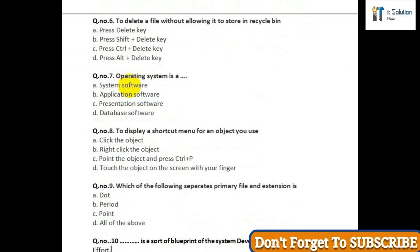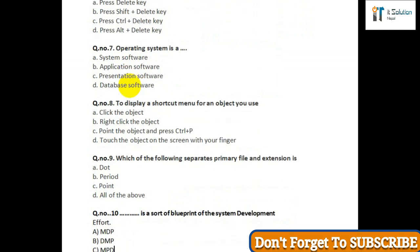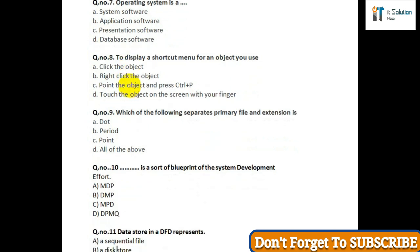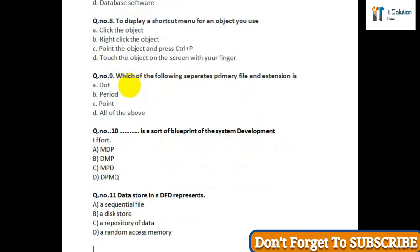Question number nine: Which of the following separates the primary file name and extension — option A: dot; option B: print; option C: point; option D: all of the above. Question number ten: Data is a short blueprint of the system development effort — option A: MDP; option B: DMP; option C: MPD; option D: DPM.